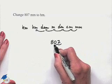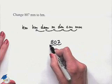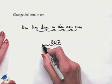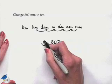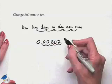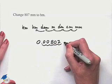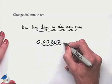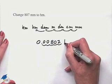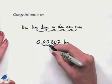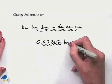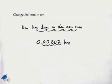So that's one, two, three, four, five. We'll now need to add zeros, and so we can change 807 millimeters to 0.00807 hectometers.